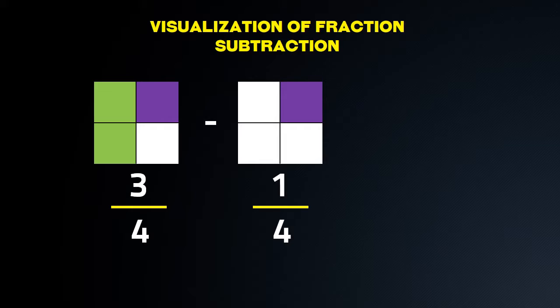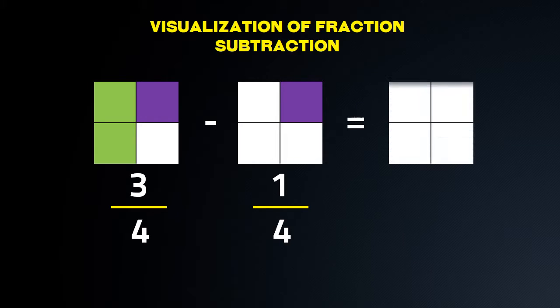We have to subtract 1 by 4 from 3 by 4. We will remove 1 part from 3 parts. So, if we remove 1 part, we get 2 parts, which is 2 parts from total 4 parts. Hence, 2 by 4.